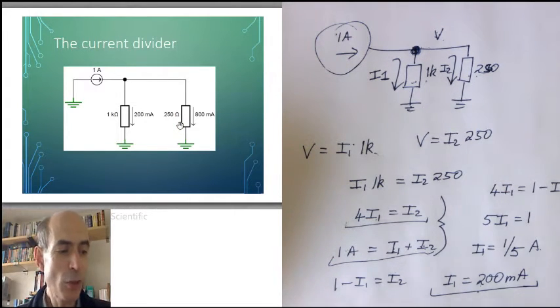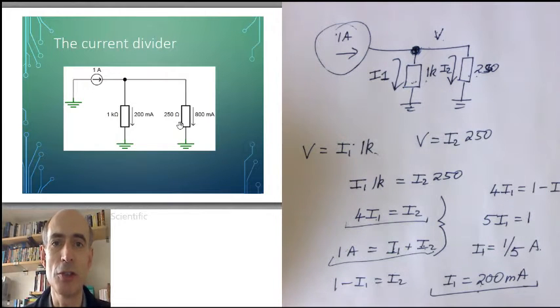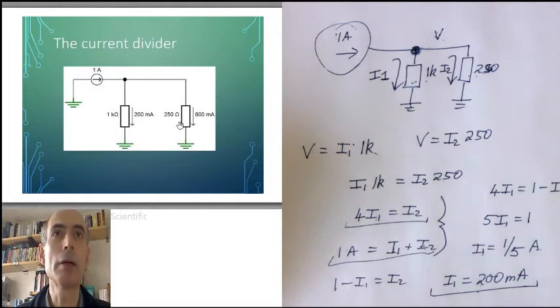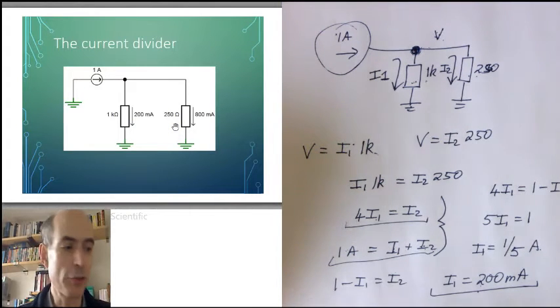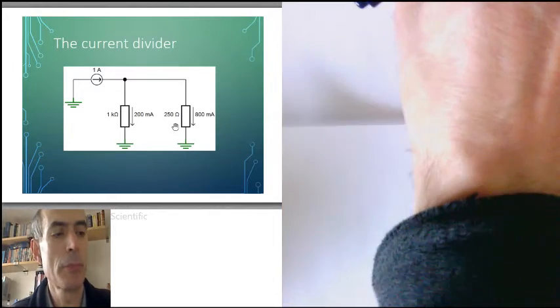Once again, we don't want to have to go through all of this calculation every time we see a circuit like this. So what we'd ideally like is a formula that we can simply apply to a situation like this, and which will tell us the currents that are flowing down through the resistors. So let's try it again, but this time with some algebra.